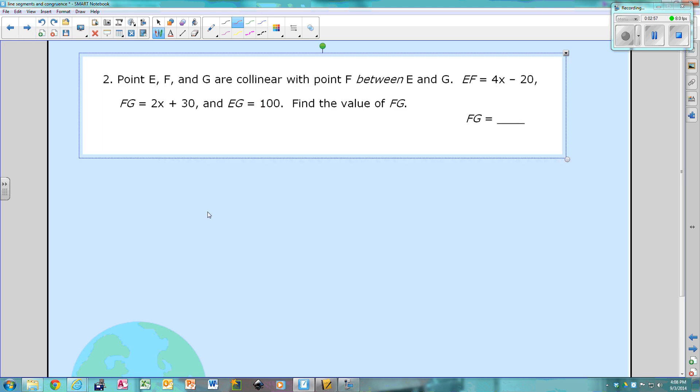Next. If point E, F, and G are collinear, so remember what that means, collinear. Collinear means they're all on the same line. So if you have a picture of a line, and you're going to put three points, E, F, and G, because they're collinear. F is between E and G, so that means E and G are on the end, and F is just somewhere in between.